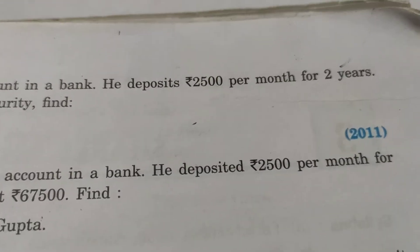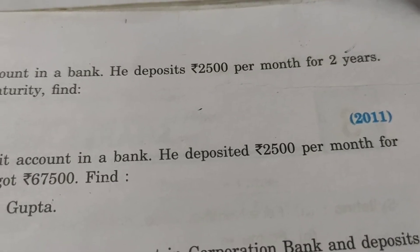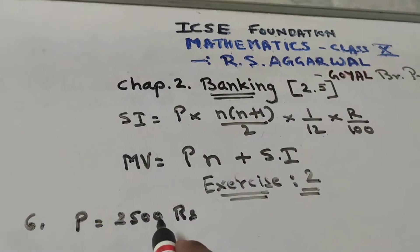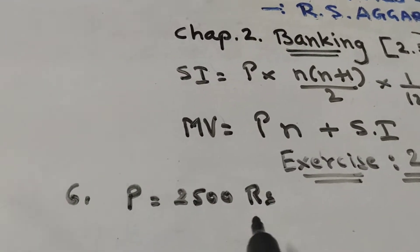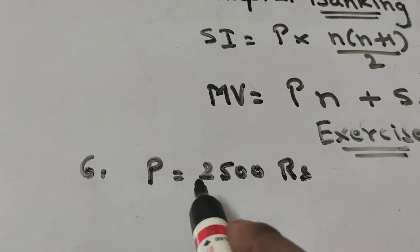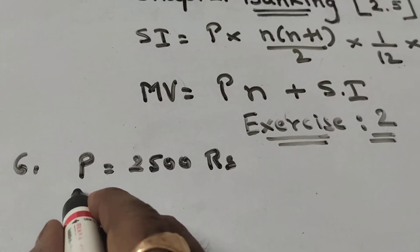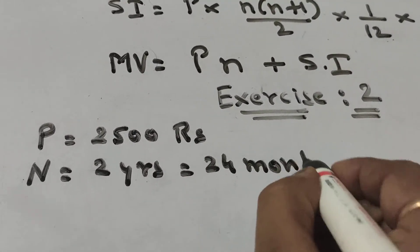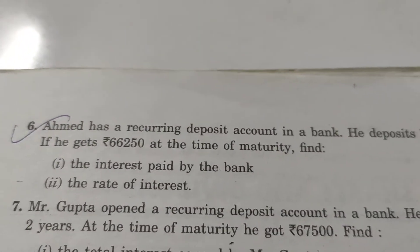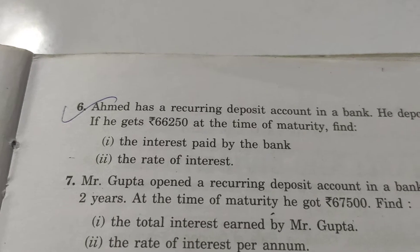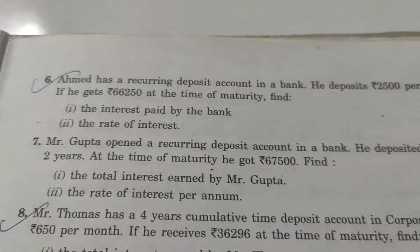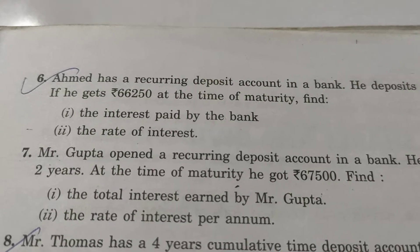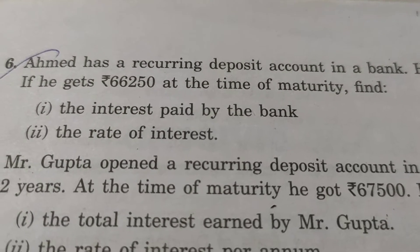Let us write down the data. P — how much principal amount is he paying every month? He is paying 2500 rupees, so P is equal to 2500 rupees. He is paying for 2 years — 2 years means 24 months. Rate of interest is not given, so we put a question mark. Simple interest is also not given, so we put a question mark. But the maturity amount he is getting is 66,250 rupees.